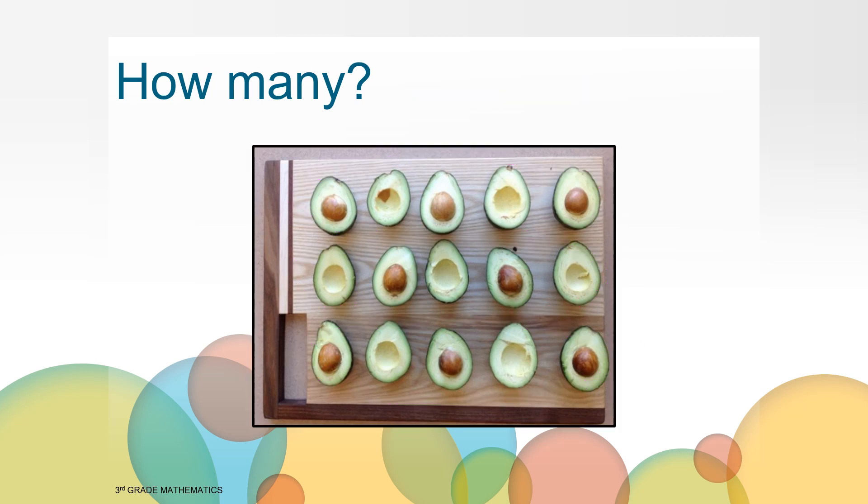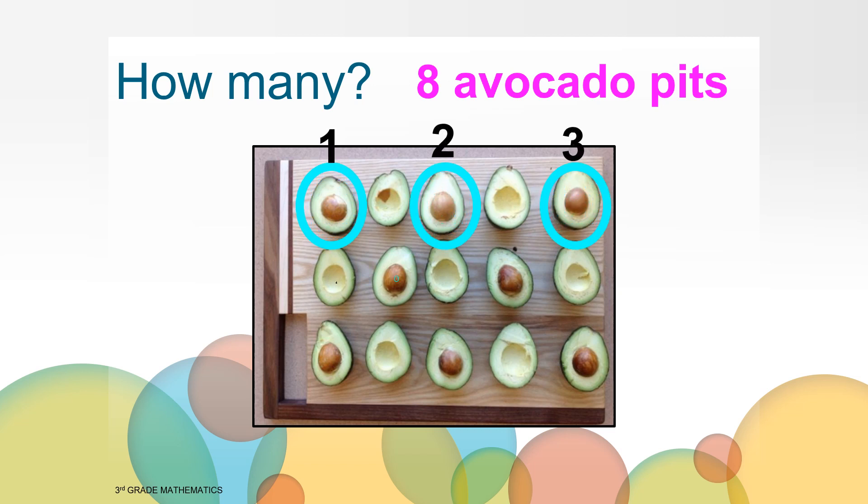How else did you think about how many you saw? You might have said eight. If someone said that there are eight, what are there eight of? Yes, there are eight avocado pits in the picture. Let's count them: one, two, three, four, five, six, seven, eight.